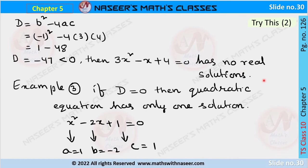For example 3, if D equals 0, then the quadratic equation has only one solution. For example, x² minus 2x plus 1 equals 0. Here the coefficient of x² is 1, the coefficient of x is minus 2, and the constant term is 1. So a equals 1, b equals minus 2, and c equals 1.